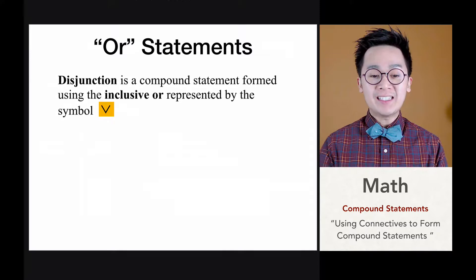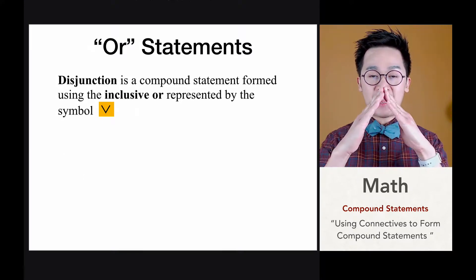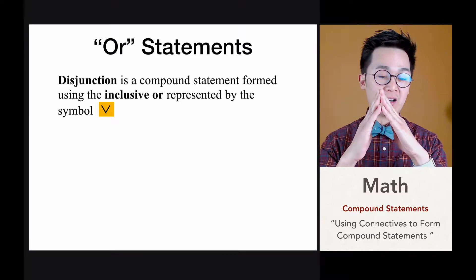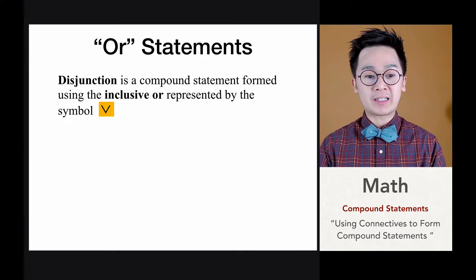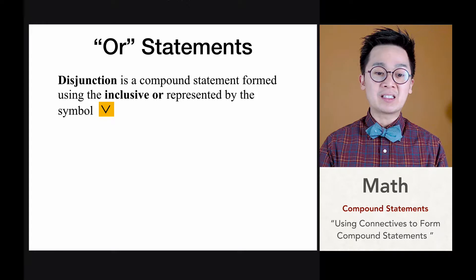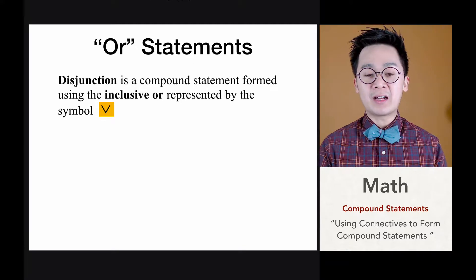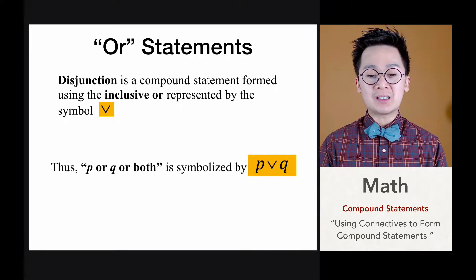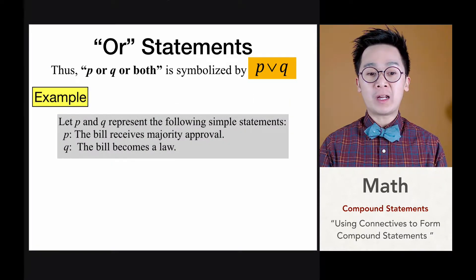The next connective is the OR statement. Just like in symbolic logic, the OR statement uses the opposite symbol from AND — it is given by a small V symbol. This is also known as disjunction, which is the compound statement formed using inclusive OR, represented by the symbol P ∨ Q.